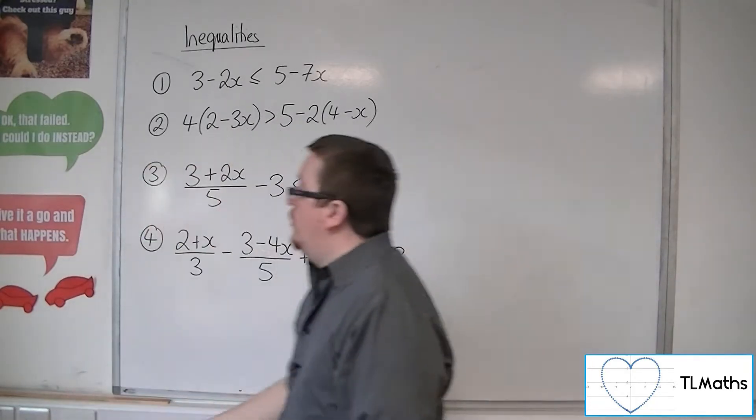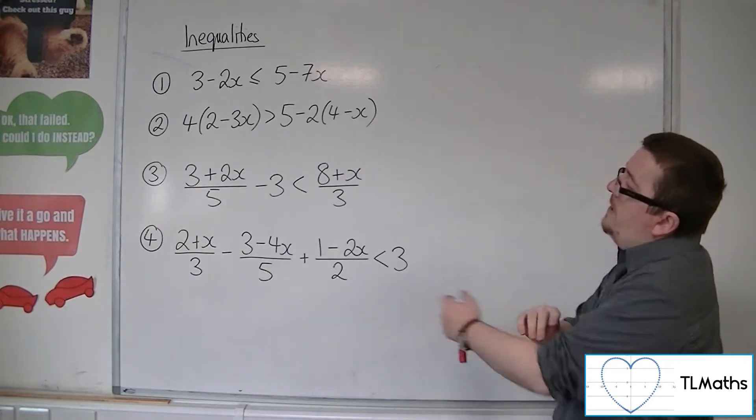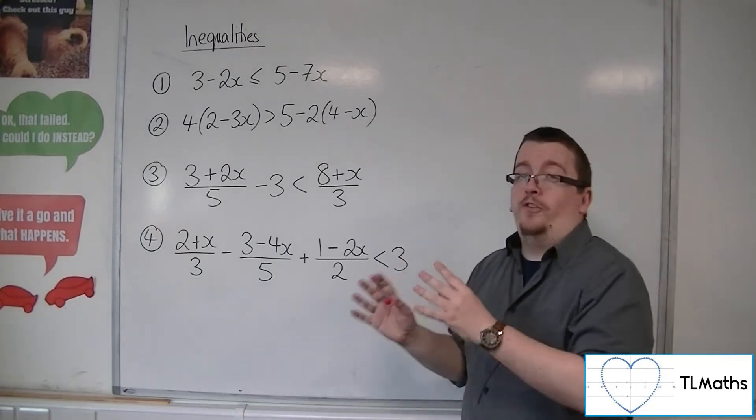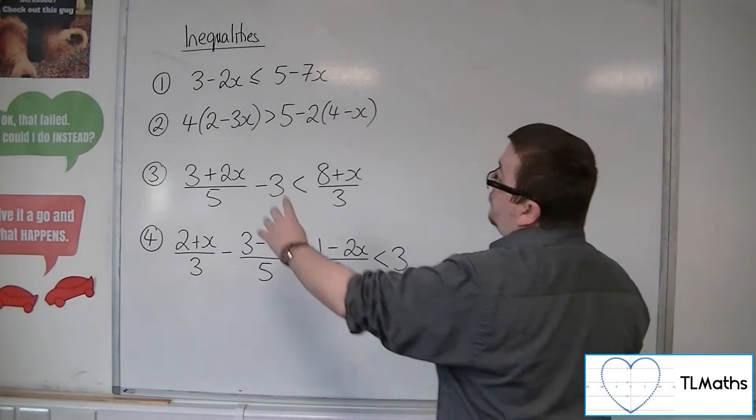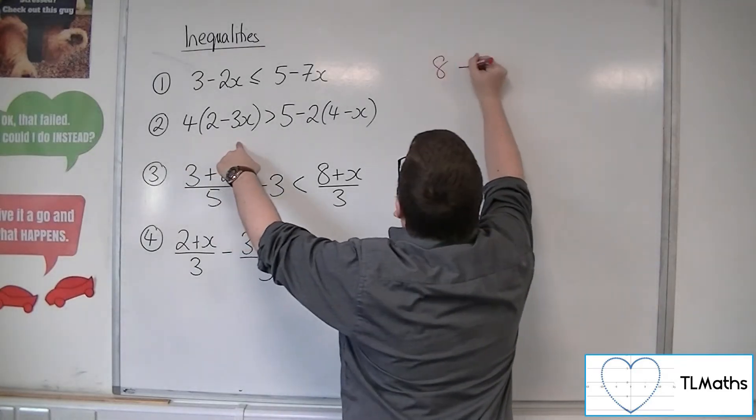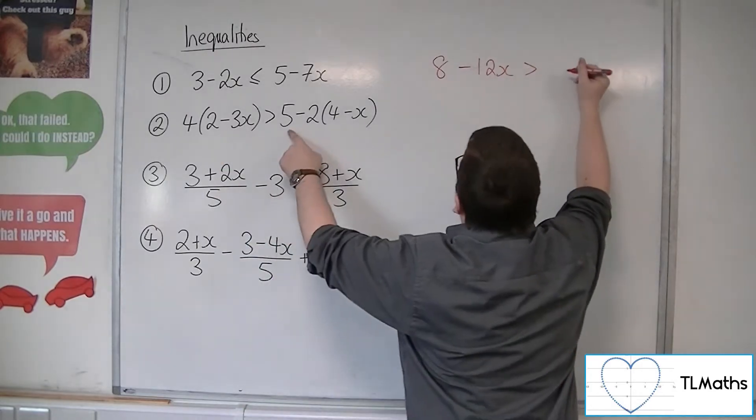So let's start introducing some brackets. Four lots of 2 minus 3x is greater than 5 minus 2 lots of 4 minus x. So really, you want to expand the brackets first. So four lots of 2 is 8. Four lots of minus 3x is minus 12x. We've still got the greater than. Then we've got 5.